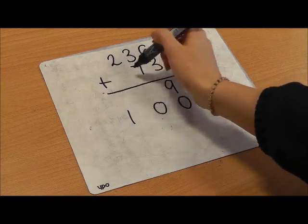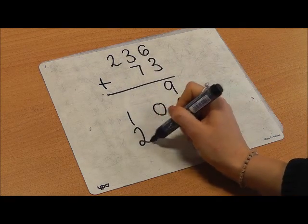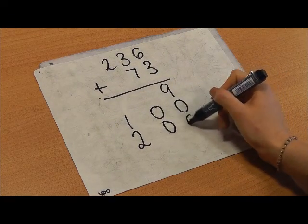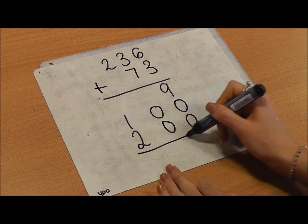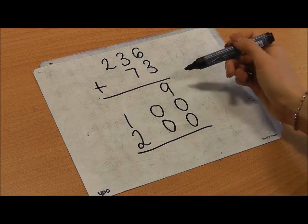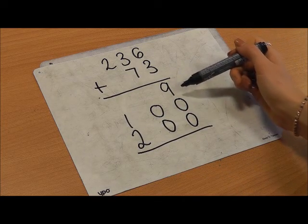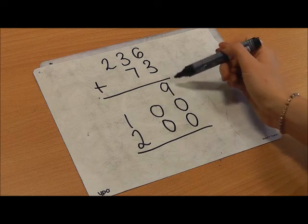200 add nothing is 200. Now I'm going to add together my answers to each column.